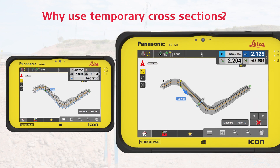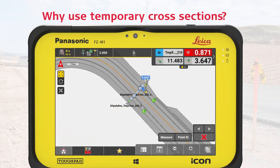Instead, we focus on the current active cross-section which we want to stake out. As we mark points on this cross-section, we can immediately identify any differences between the constructed road and the design road.